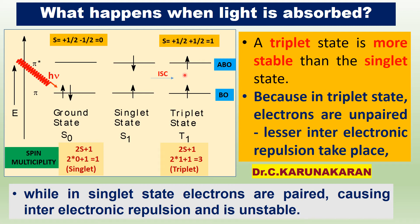Due to inter-system crossing, the spin rearranges. The total spin changes, giving another excited state. On inter-system crossing, it becomes the triplet excited state T1.